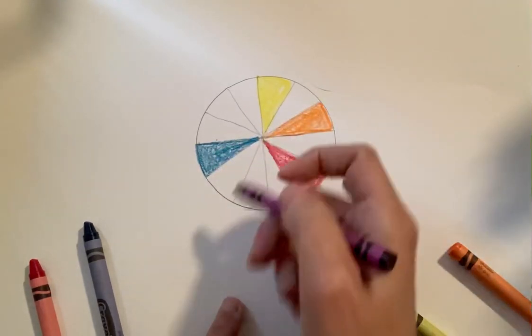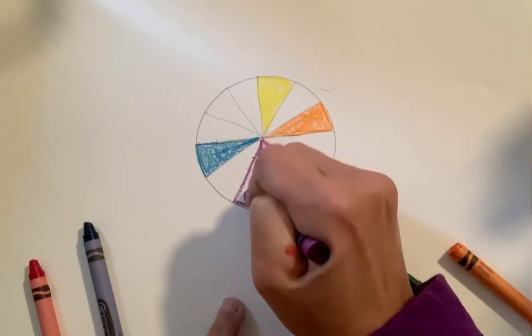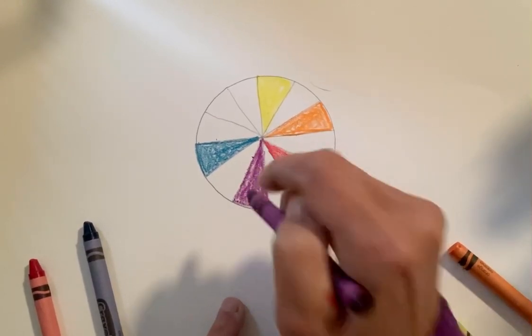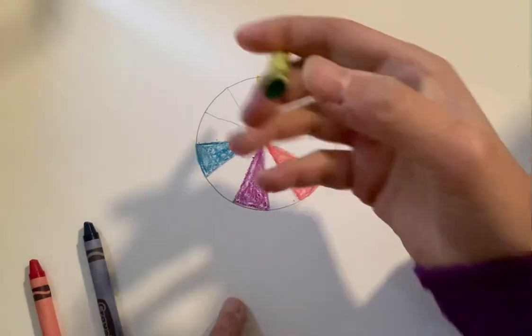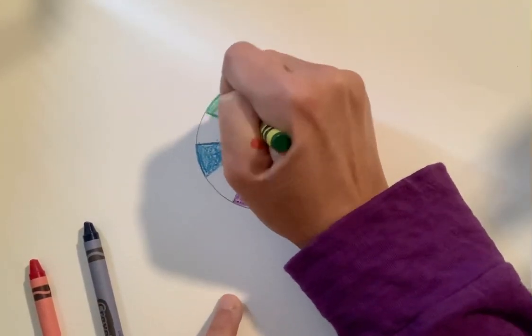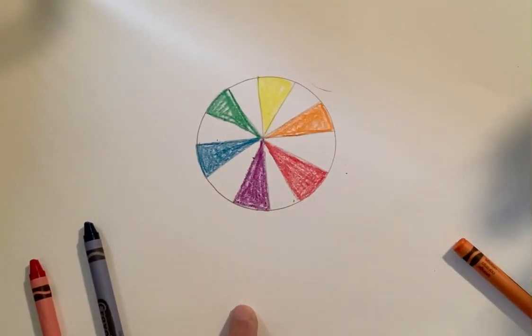Red and blue make purple. So I'm going to fill in my circle here with purple. And blue and yellow make green. So I'm going to fill that one in with green. Now it kind of looks like one of those candies that we love so much.